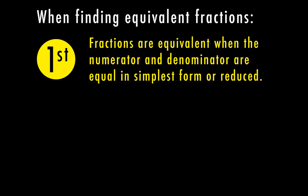The first thing we need to know when we're finding equivalent fractions is that fractions are equivalent when the numerator and denominator are equal in simplest form or reduced. So just to give you an example, I have 3 fourths equals 6 eighths. I know that 3 goes into 6 by multiplying times 2, and 4 goes into 8 by also multiplying times 2. So since they can be reduced, 6 eighths can be reduced to 3 fourths — these two are equivalent fractions because I can reduce them to simplest form.